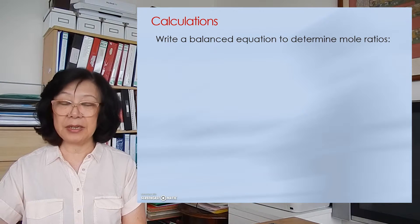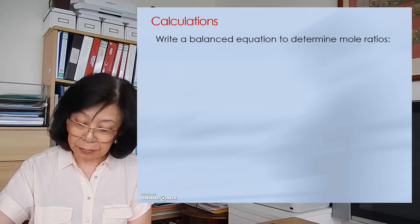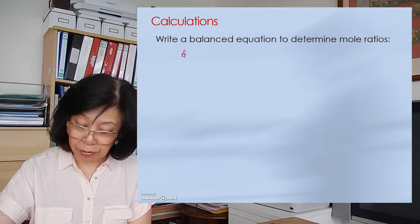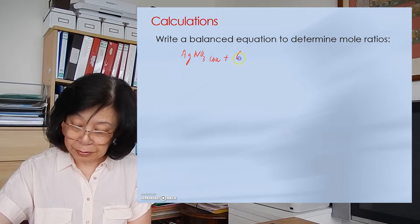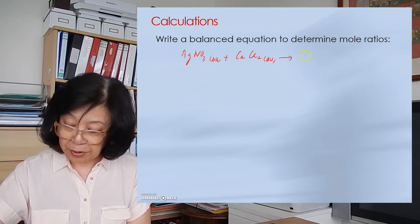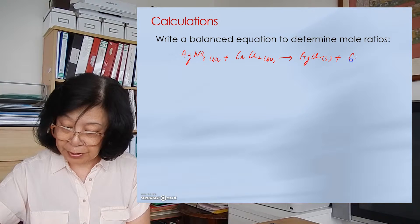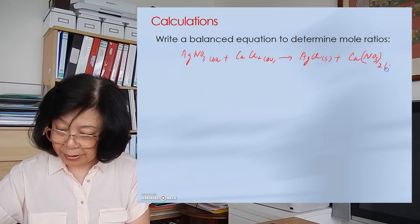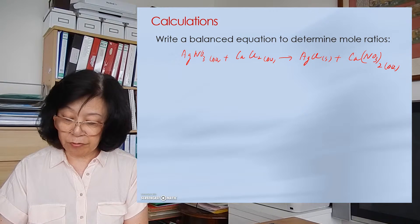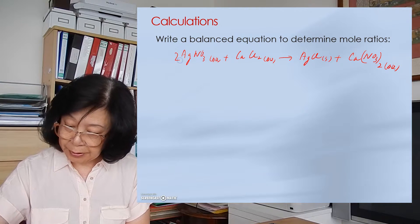Here is the calculation. First we write a balanced equation: silver nitrate (aqueous) added to calcium chloride (aqueous) forms silver chloride precipitate and calcium nitrate in solution as spectator ions. We balance it by placing a coefficient of 2 before silver nitrate and 2 before silver chloride: 2 AgNO₃(aq) + CaCl₂(aq) → 2 AgCl(s) + Ca(NO₃)₂(aq).